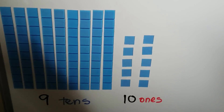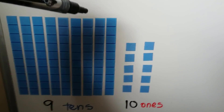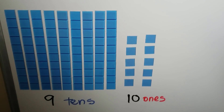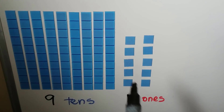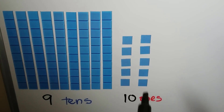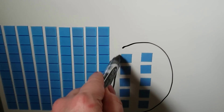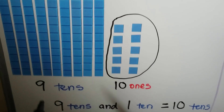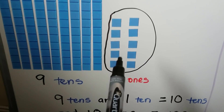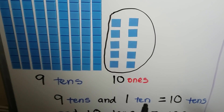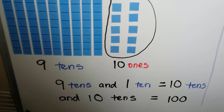If we have nine tens, let's count them: one, two, three, four, five, six, seven, eight, nine. We have nine tens, and we have some ones here — ten ones. These ten ones make a ten. That means we have nine tens and one ten. The ten ones make another ten. Nine tens and one ten is equal to ten tens, and ten tens is equal to 100.